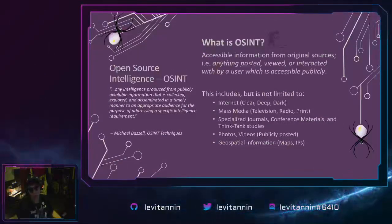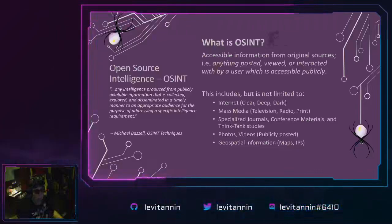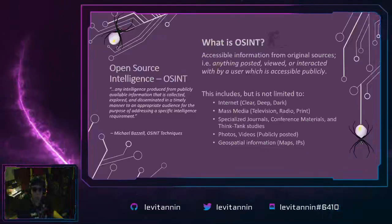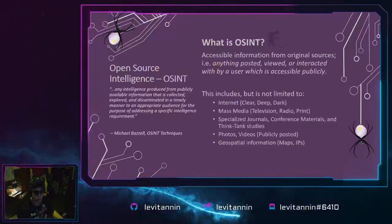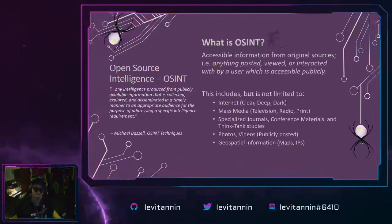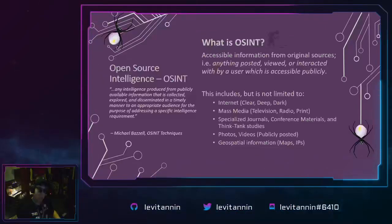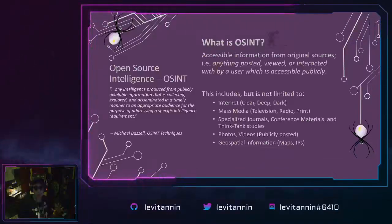What is open source intelligence? Most people in this village probably have some idea, but we're going to break it down anyway. Open source intelligence is anything that is accessible from original sources — broken down as accessible, original information or data. You can also explain this as something posted, viewed, or interacted with by a user which is accessible publicly online or offline; it doesn't have to be specifically on the internet. This includes, but is not limited to, the internet at the clear, deep, and dark levels.